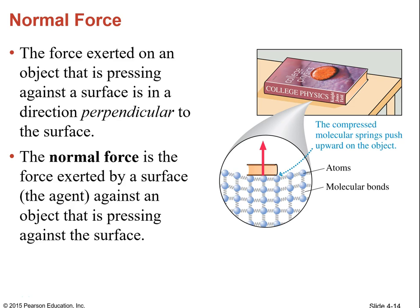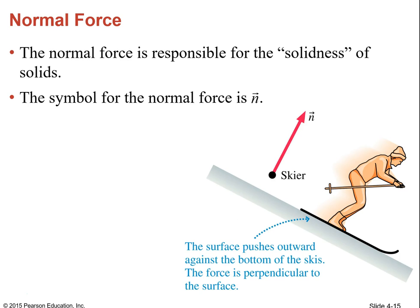The normal force always acts perpendicular to the surface the object is sitting on — whether it's a flat surface like a table or an angled surface like a ramp. When an object is sitting still, the normal force is directly opposed by the gravitational force and the net force is zero, so it doesn't go anywhere. If the object is on an angled surface, the normal force goes at an angle perpendicular to that surface.